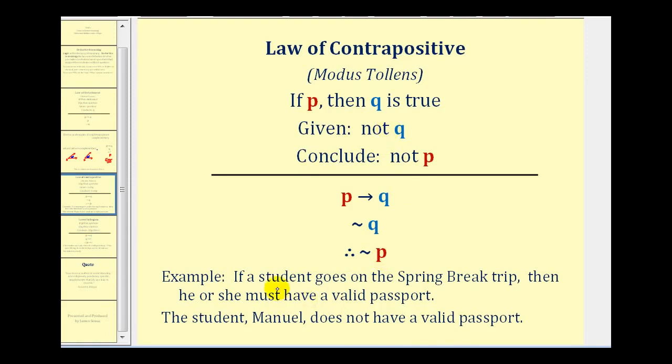Here's an example. If a student goes on the spring break trip then he or she must have a valid passport. If we know this to be true and then we're given that the student Manuel does not have a valid passport, we can logically deduce that Manuel will not go on the spring break trip. So this is a valid form of deductive reasoning.